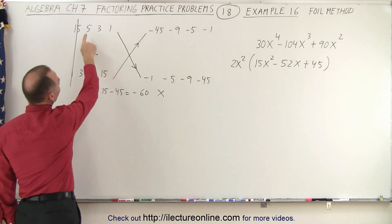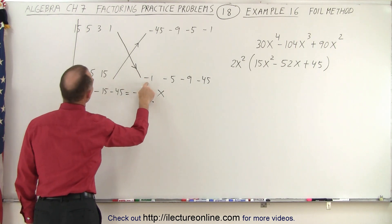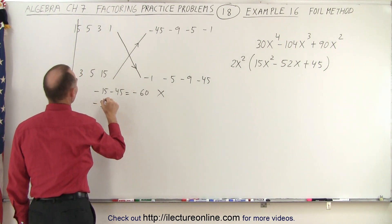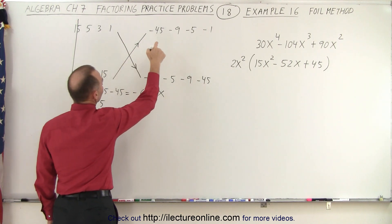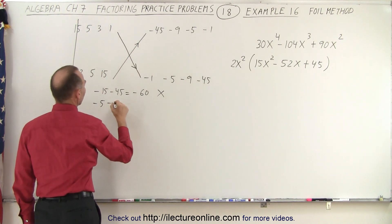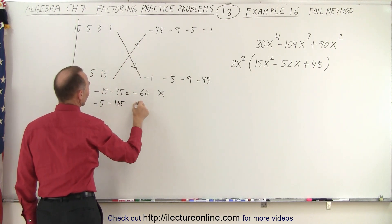All right, let's try 5 and negative 1. So 5 and negative 1, that gives us minus 5, and 3 times negative 45. Well, that's way too big, that's minus 135, so that doesn't work.